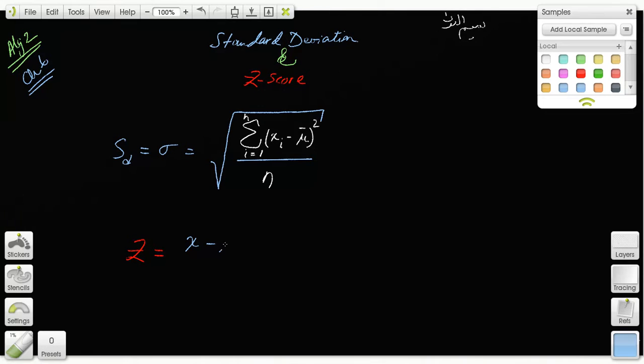The z-score is x minus the mean, like this. X minus the mean here, you can use mu or another mean, over the standard deviation like this.